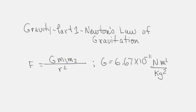m1 is the mass of the first body, m2 is the mass of the second body, and r-squared is the distance between the centers of masses 1 and 2.